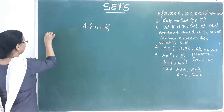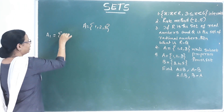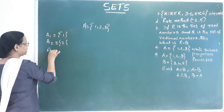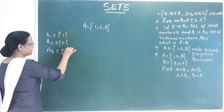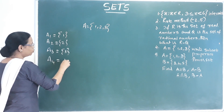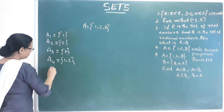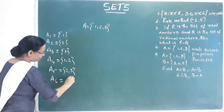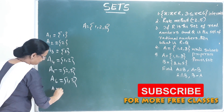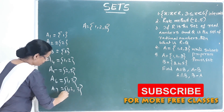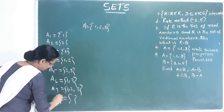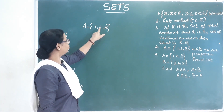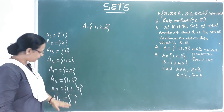We have subsets: A1 = {1}, A2 = {2}, A3 = {3}, A4 = {1, 2}, A5 = {1, 3} — wait — A6 = {1, 3}, A7 = {1, 2, 3}, A8 = null set. One set means one set.